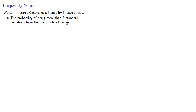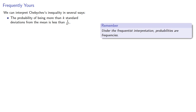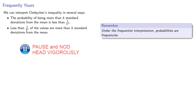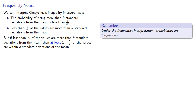We can interpret Chebyshev's inequality in several ways. First, the probability of being more than k standard deviations away from the mean is at most 1 over k squared. Under the frequentist interpretation, probabilities are frequencies, so we could also say that less than 1 over k squared of the values are more than k standard deviations from the mean. However, we often rephrase Chebyshev's inequality to talk about values within some number of standard deviations of the mean: at least 1 minus 1 over k squared of the values are within k standard deviations of the mean.